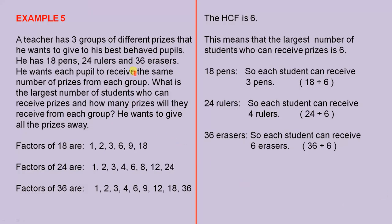Example 5. A teacher has three groups of different prizes that he wants to give to his best behaved pupils. He has 18 pens, 24 rulers, and 36 erasers. He wants each pupil to receive the same number of prizes from each group. What is the largest number of students who can receive prizes, and how many prizes will they receive from each group? He wants to give all the prizes away.